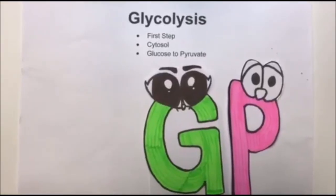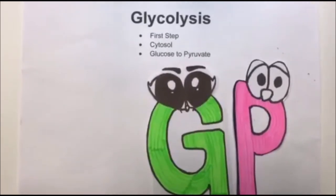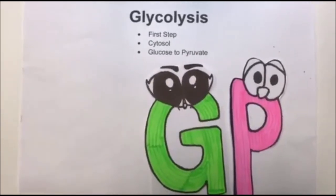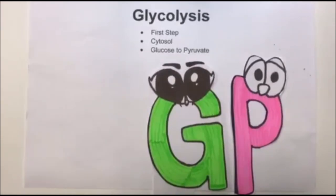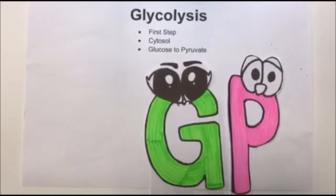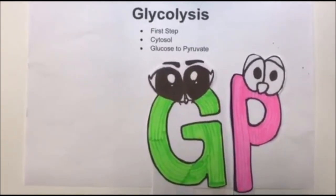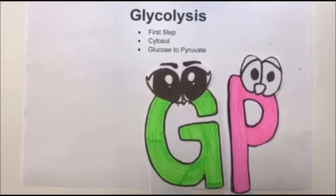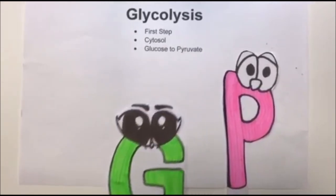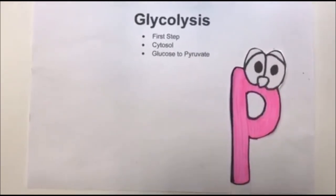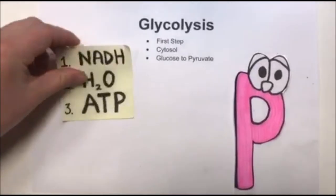Let's start with glycolysis. This is the first step in cellular respiration. It takes place in the cytosol of the cell. This is where glucose is converted to pyruvate, and there are other products that are formed.